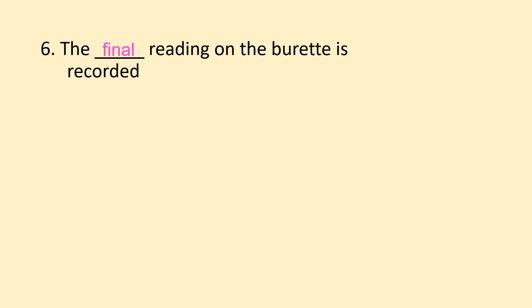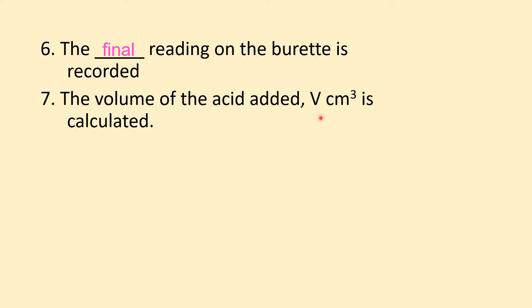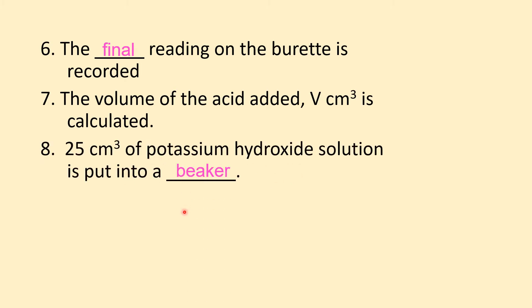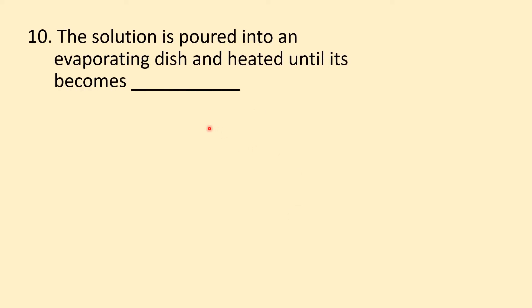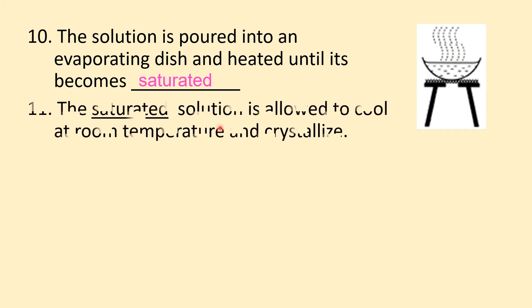The final reading of the burette is recorded. The volume of acid needed — V cm³, which is 25 cm³ — is calculated. Then 25 cm³ of potassium hydroxide solution is put into a beaker with no indicator added. V cm³ of dilute nitric acid from the previous step is added to the beaker without phenolphthalein, as phenolphthalein is an impurity. The solution is poured into an evaporating dish and heated until it becomes saturated — either until it reduces to one third of the initial volume, or until the solution crystallizes on the end of a glass rod.